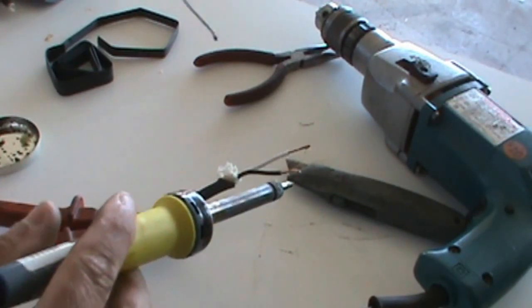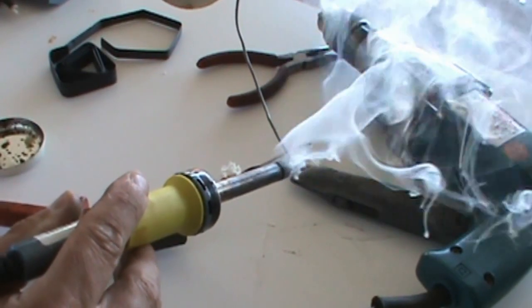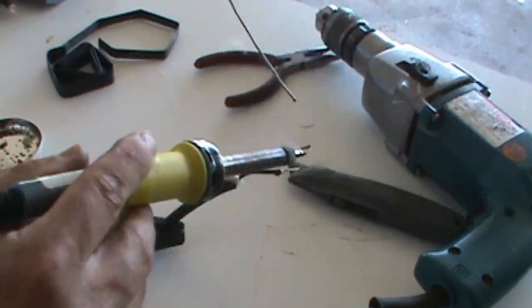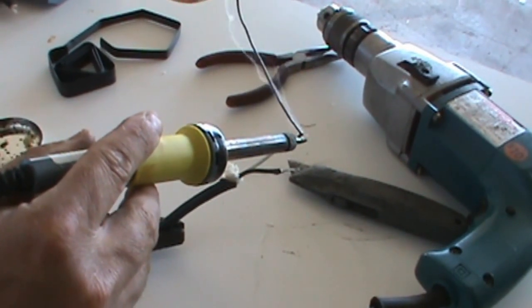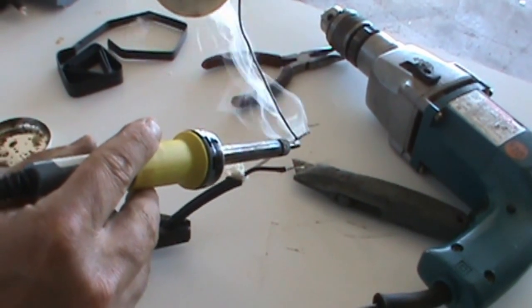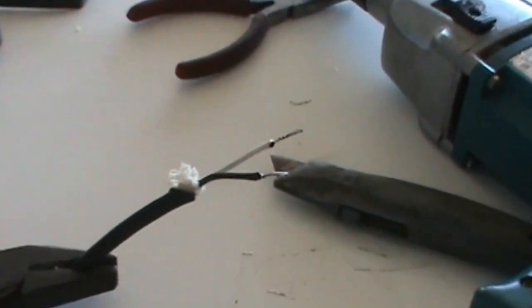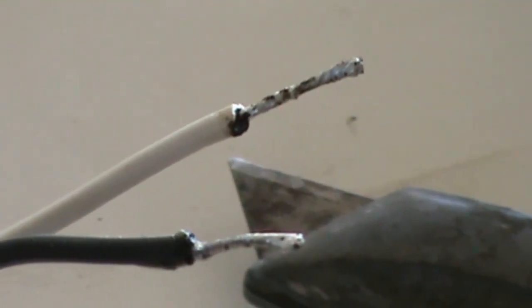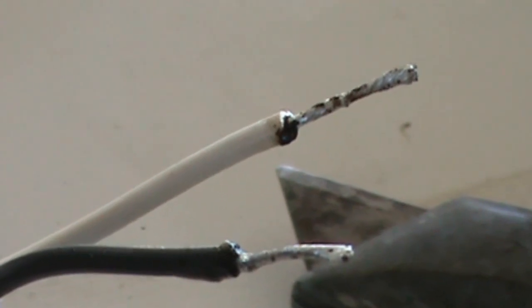And what we want to do is tin these wires, which means heat them up. And you just want to apply a little bit of solder so that the wires turn silver. Once the wires are silver, they're tinned. So that's basically all you have to do to tin them. And we'll try and zoom in and take a look at what that looks like. You can see that they're now covered with solder. So you want to do that with both wires.